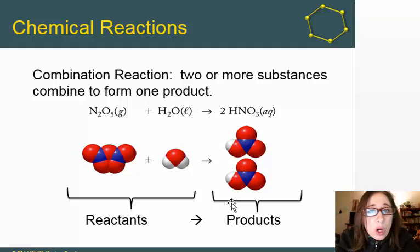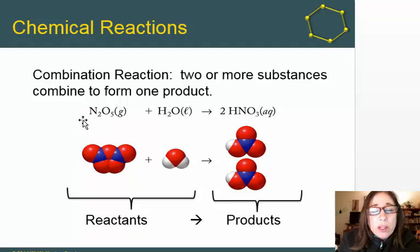We're not going to be able to draw a molecular model for every chemical equation we write, so we need to know how to count atoms. The way we do that is multiply the coefficient by the subscript for each element. In this chemical equation, I have three elements: nitrogen, oxygen, and hydrogen.